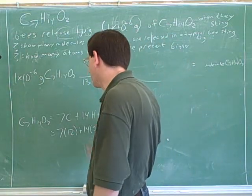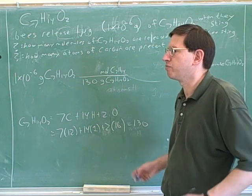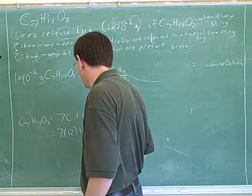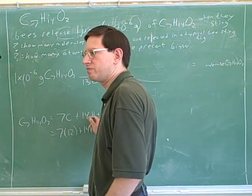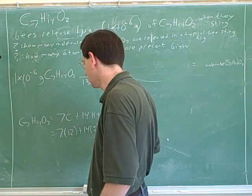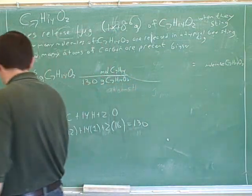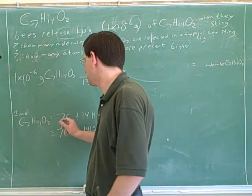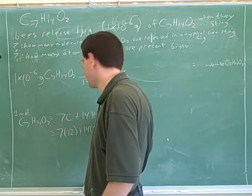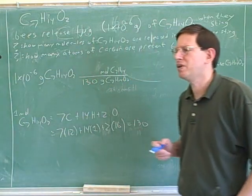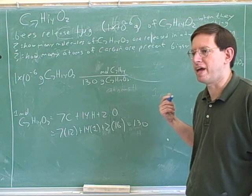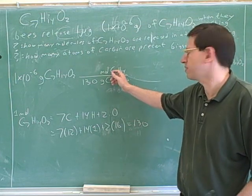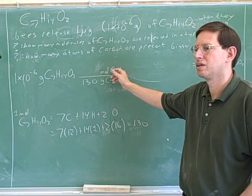So the periodic table tells you the mass of one mole of something. So this 130, so here we were assuming we had seven moles of carbon, and 14 moles of hydrogen, and two moles of oxygen. So how many moles of the molecule were we assuming we had? Well, weren't we assuming we had one mole of the molecule? Because one mole of the molecule would give you seven moles of carbon, 14 moles of hydrogen, and two moles of oxygen. Remember, that's what the periodic table gives you. The periodic table gives you molar masses. It gives you the mass of a certain number of moles. So how many moles should I put on the top here? One.